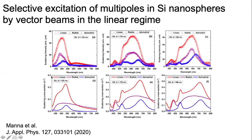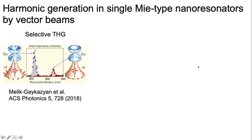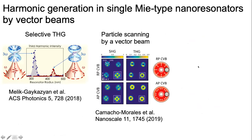Interestingly, the same idea of selective excitation of multipoles in the linear regime was studied and published only last year. Again, you can see that radial and azimuthal polarization can be coupled to different modes of the particle.